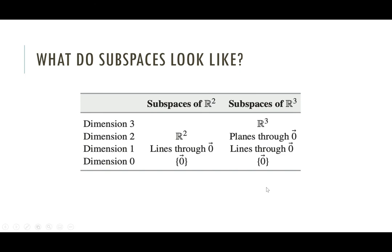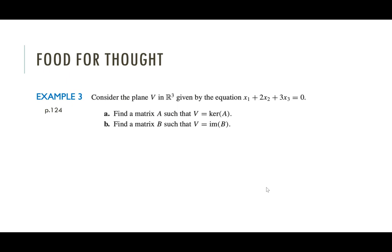I want to end with just a little food for thought. So, in example three on page 124 of your textbook, it asks you to consider the plane V in R3 given by this equation. Now, one, I just want to say this is certainly the equation of a plane in R3. Also, because there is no constant term, this is a plane that goes through the origin. So this plane defines a subspace of R3. And then your book says, find a matrix such that this subspace is the kernel of that matrix. And then it asks you to find another matrix such that that subspace was the image of the matrix. And you might wonder, like, is that possible? I mean, they're telling you to do it, so it must be. And I do encourage you to look at how they do this.